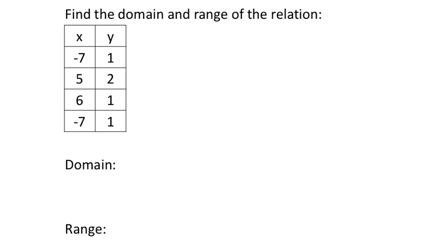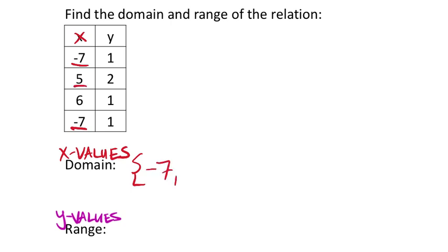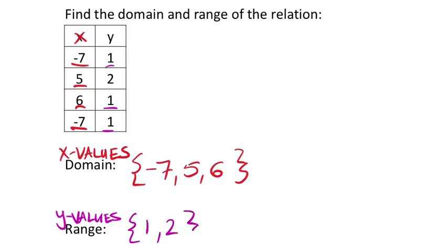For this last set of ordered pairs, the domain listed least to greatest: {-7, 5, 6}. Even though there are four ordered pairs, we only have three x values because negative 7 repeats. For the range, the y values: there are only two unique values. Even though there are three y values of 1, we only list it once. So the range is {1, 2}.